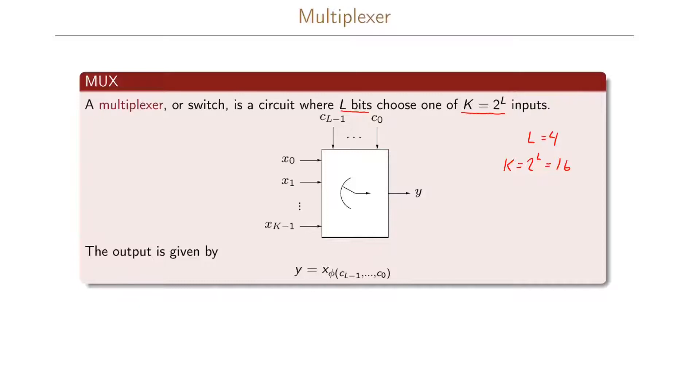The multiplexer is often written using this symbol here. On the left hand side we have our k inputs, and on the top we have our L inputs that are used to choose one of the k different inputs. Our output y here is given as x indexed by our phi function, which takes as input our c variables.